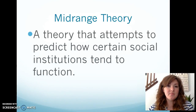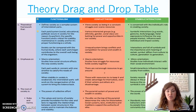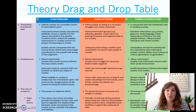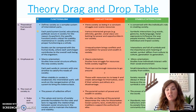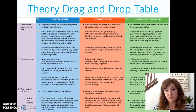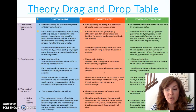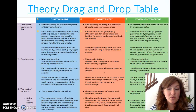Mid-range theory attempts to predict how certain social institutions tend to function. For the theory drag-and-drop table, the three foundational theories to focus on for Sociology 101 are functionalism, conflict theory, and symbolic interactionism. Click the hyperlink underneath this video to go to the discussion board, where you need to identify which of the three theories best fits your own life and which best fits your semester paper topic. You may also use other theories such as postmodernism, mid-range theory, or feminism.